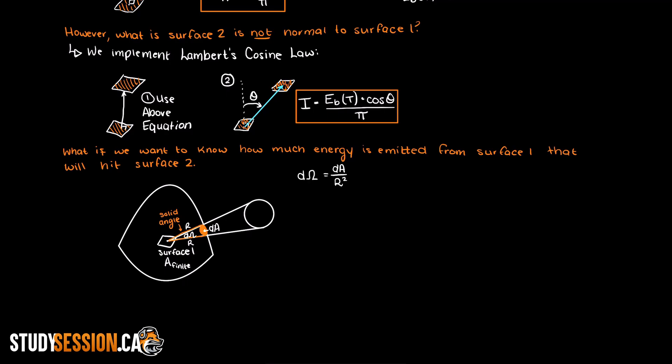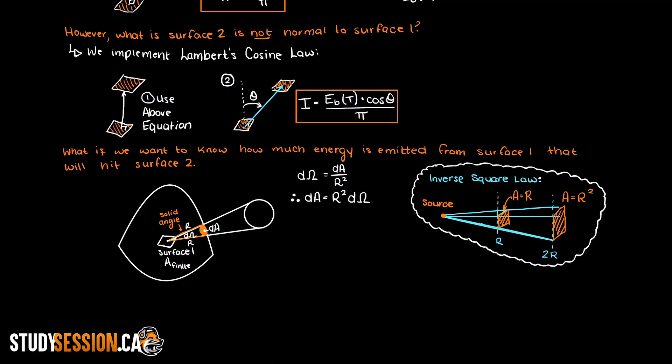Then we can use what is called the inverse square law which states that a physical quantity is inversely proportional to the square of the distance from the source, which is basically saying if we begin at a source and take one step away from that source, our area covered will be equal to one radius.